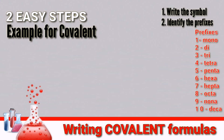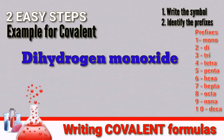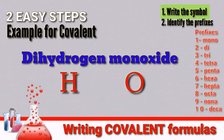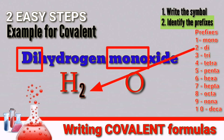Let's have another example. Our covalent compound is dihydrogen monoxide. As a reminder, get a periodic table if you're not familiar with the symbol of the elements. The first step: write the symbol of the elements - H for hydrogen and O for oxygen. Second step: identify the prefixes being used in the compound. We have 'di' and 'mono'. Di means 2, and mono means 1, but we're not going to write 1 because it is understood as an imaginary number. Always remember, write the number after the symbol of the element as a subscript.